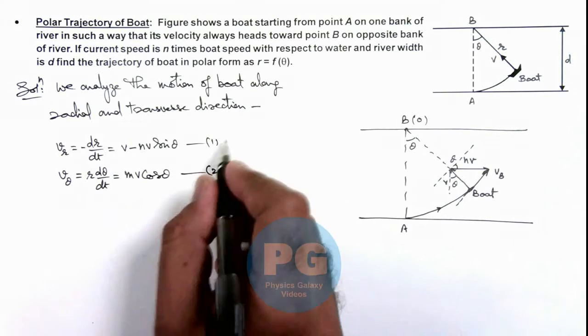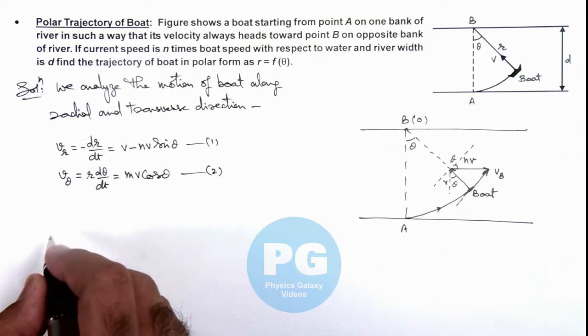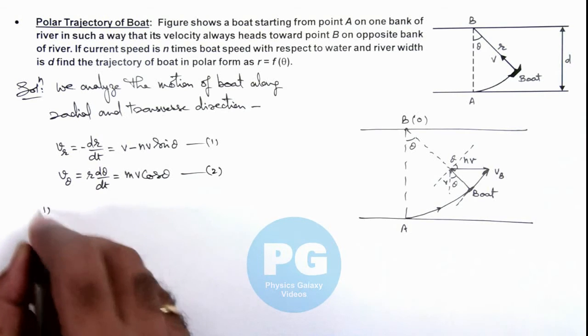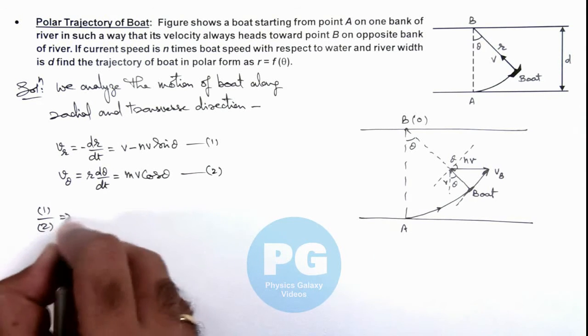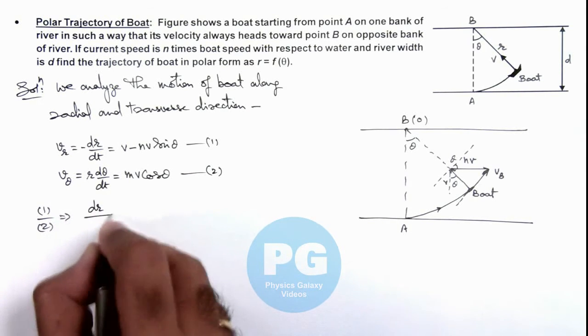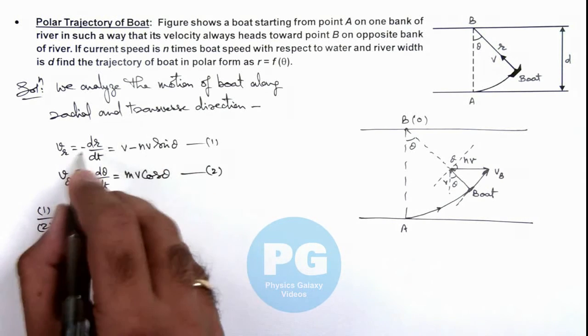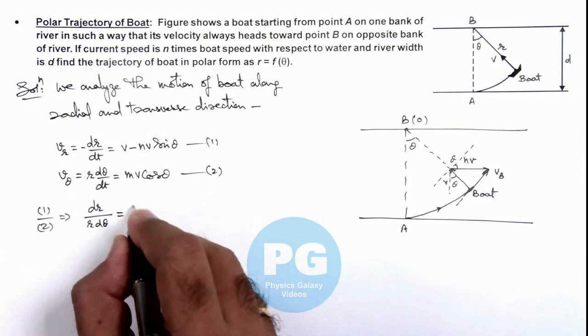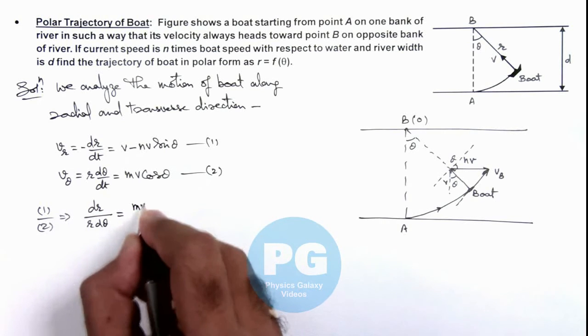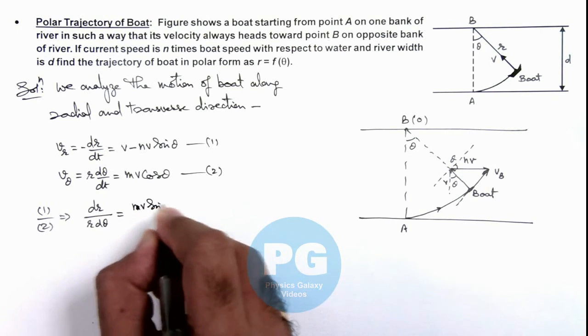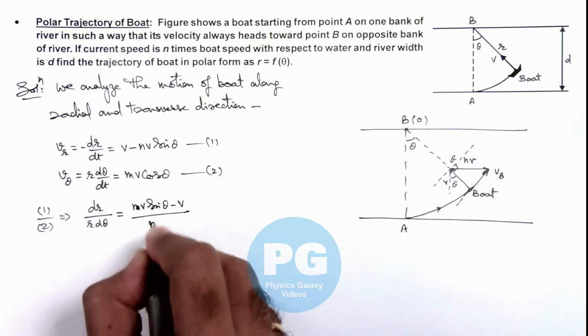Here we can divide the two equations, and you can see giving 1 by 2, this will result as dr by r d theta and this is equal to, we can take this negative sign on the other side, so it is nv sine theta minus v upon nv cosine theta.